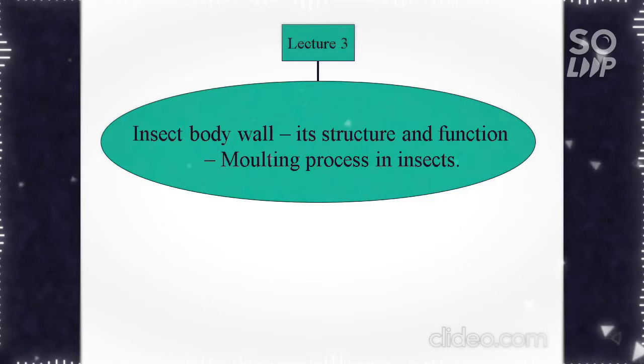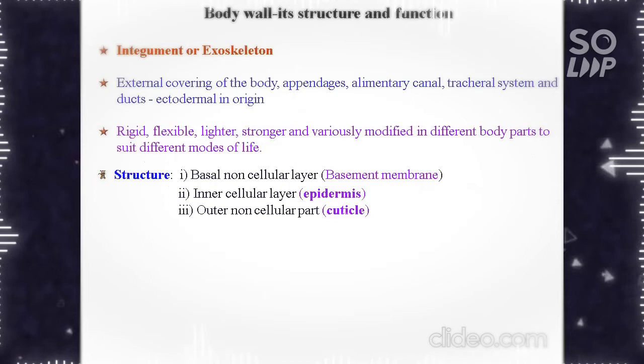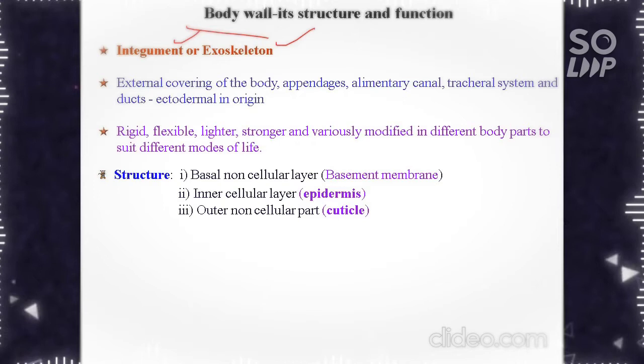Insect body wall, its structure and function and the process of molting in insects. The body wall, which is also called integument or exoskeleton, is the external covering of the body, appendages, alimentary canal, tracheal system and the ducts.